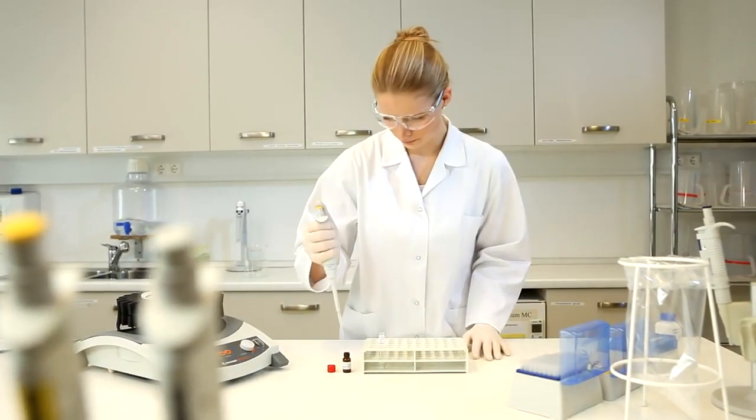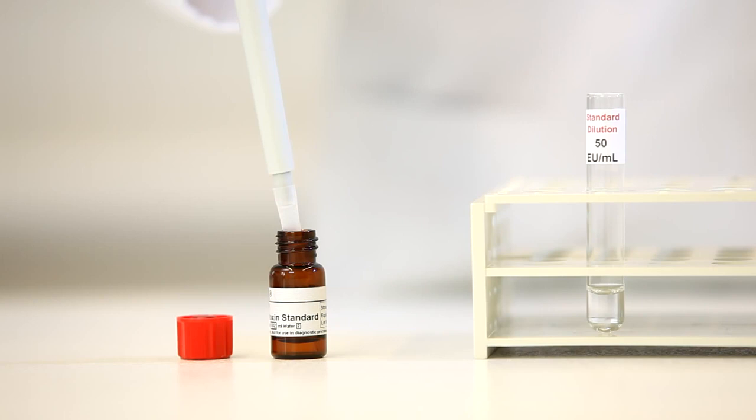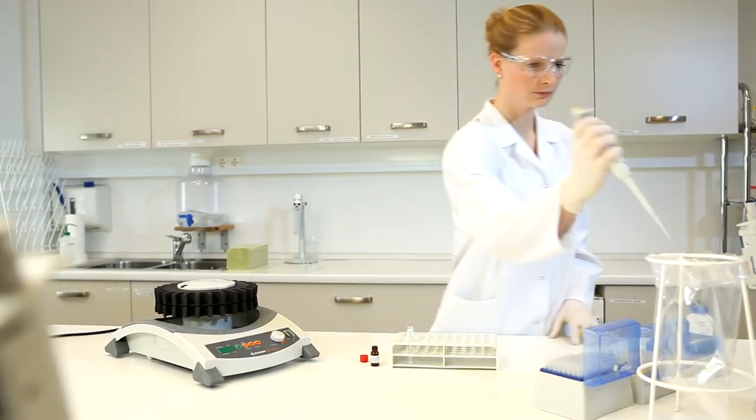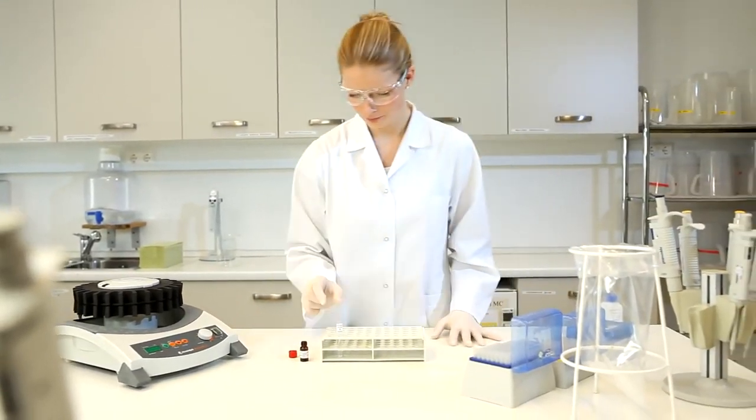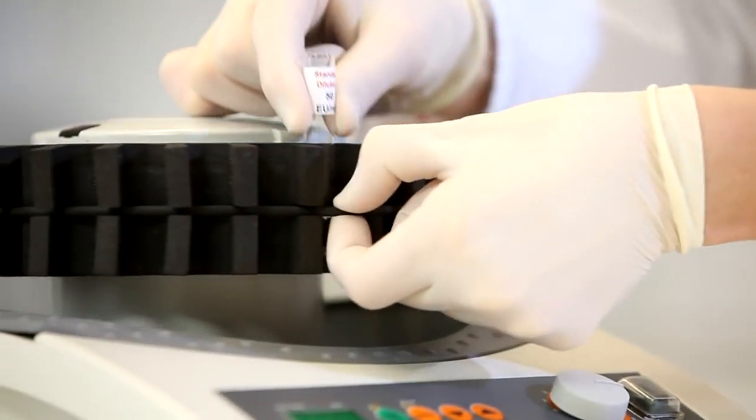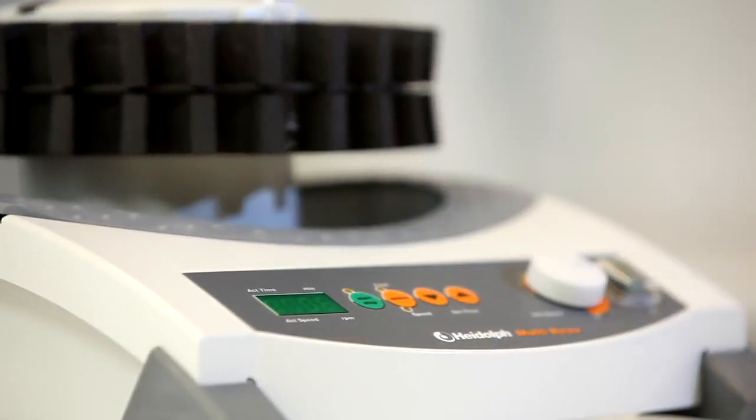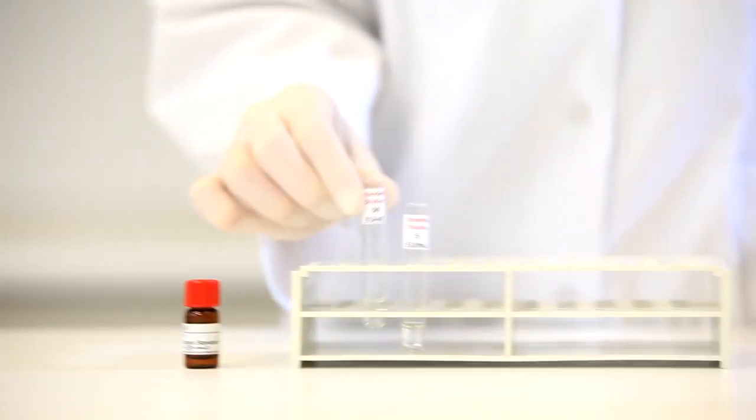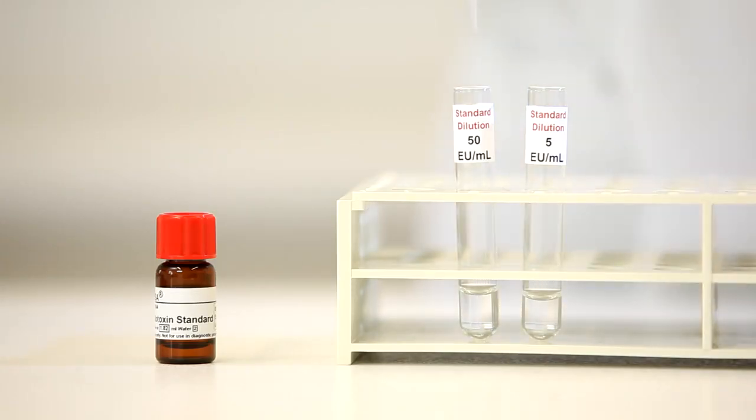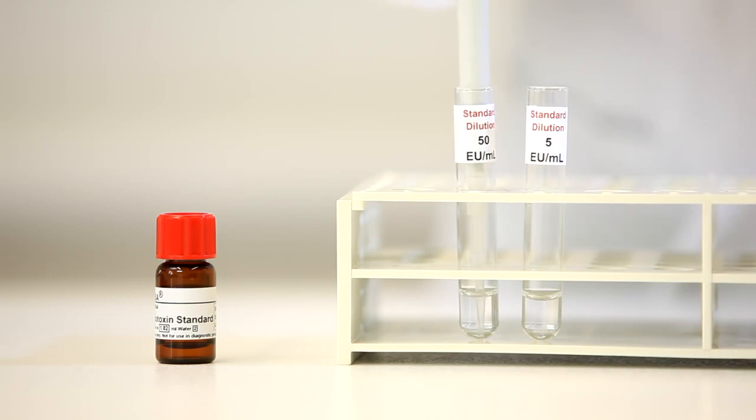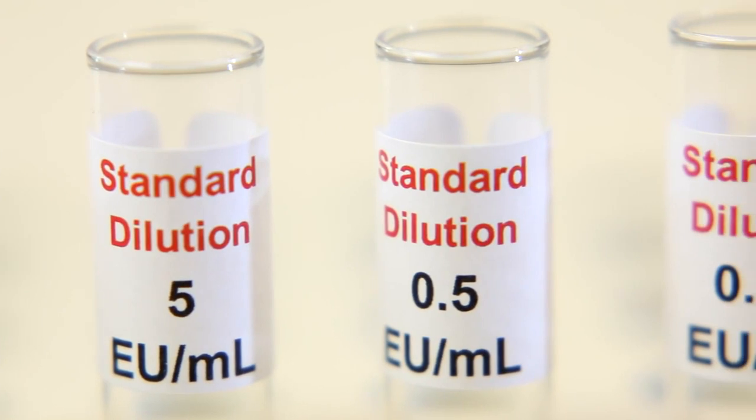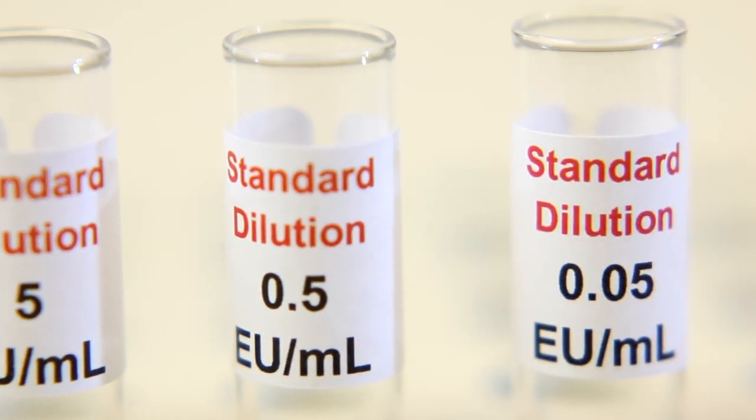To prepare the first dilution with an endotoxin concentration of 50 EU per milliliter, add 100 microliters of endotoxin standard solution. Vortex for 2 minutes. Repeat 1 to 10 dilution steps to prepare further concentrations as required. The standard curve consists of concentrations of 500 EU per milliliter, 50 EU per milliliter, 5 EU per milliliter, 0.5 EU per milliliter, and 0.05 EU per milliliter.